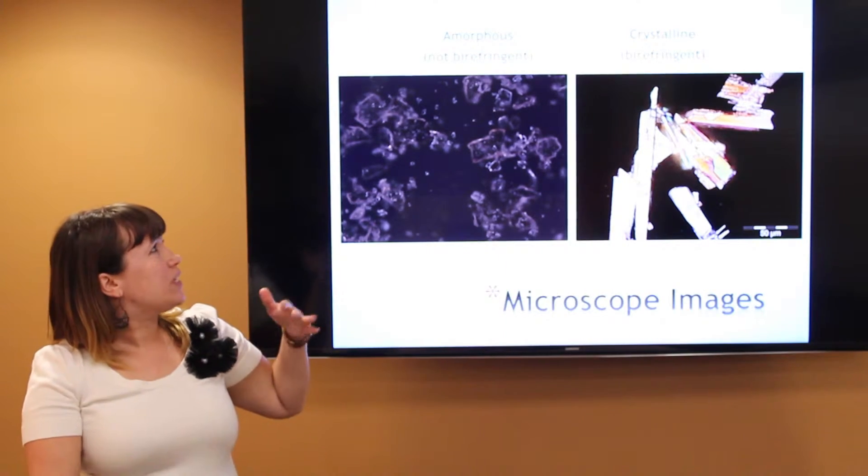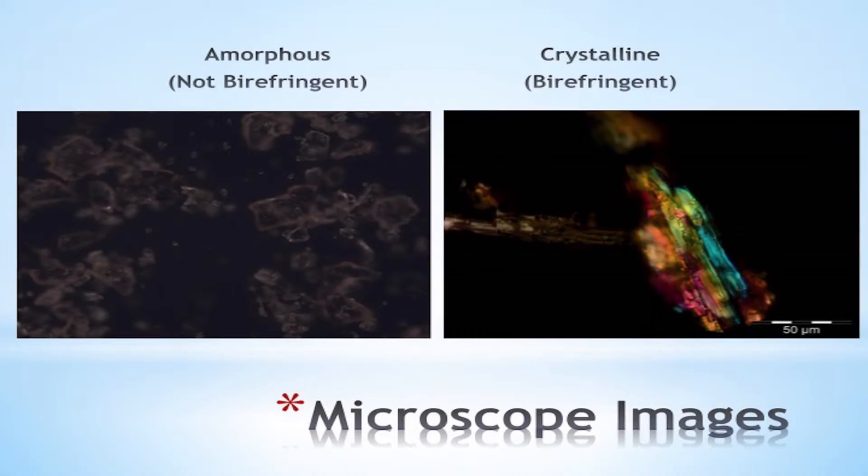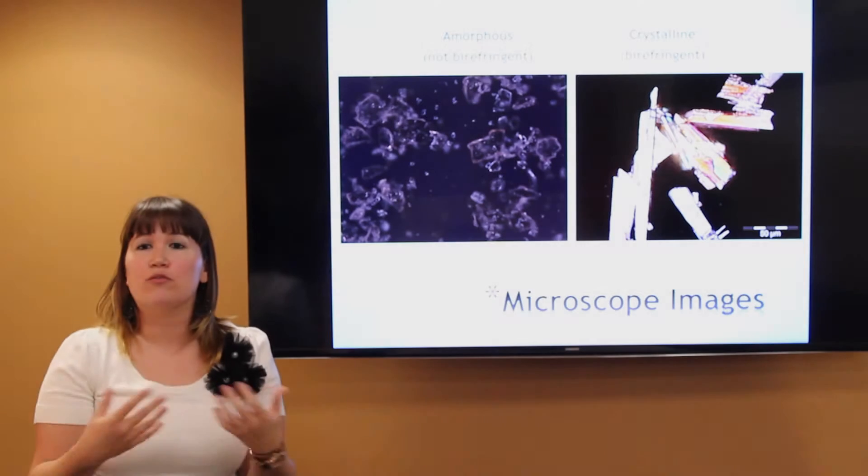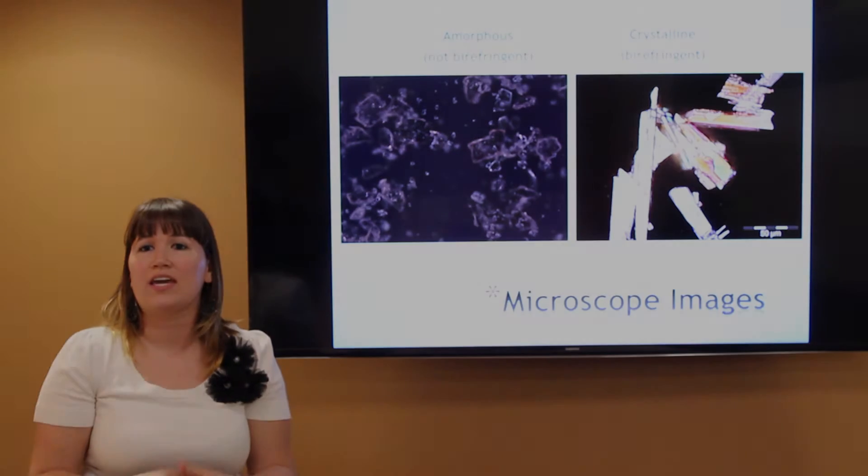We can assess whether something is amorphous or crystalline and tell lot to lot if there's been any form differences or changes with the new lot that came in.